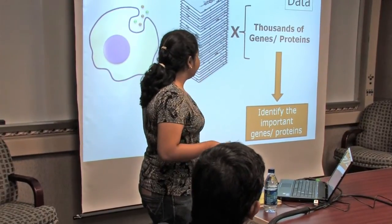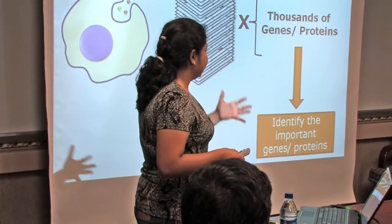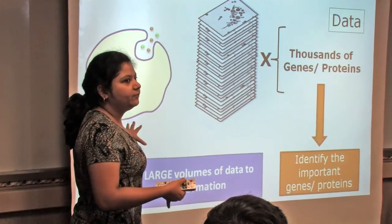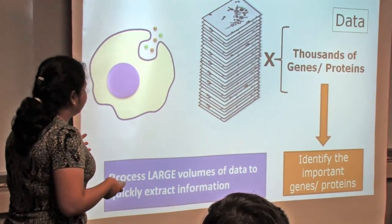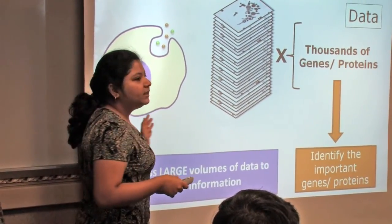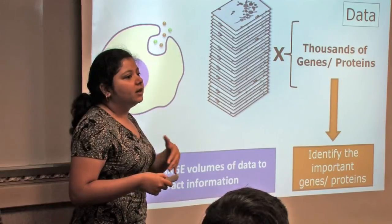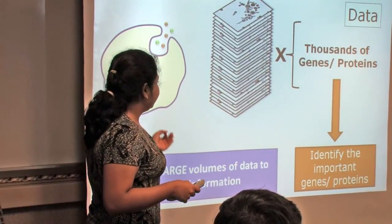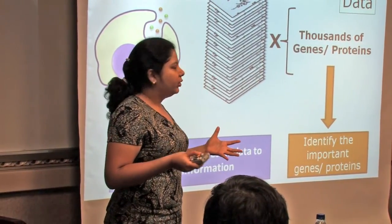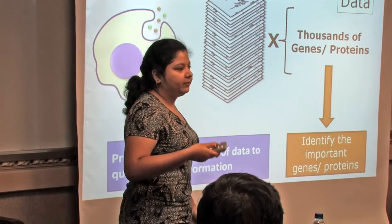Once we identify the important genes or proteins, we need to process large volumes of data and quickly extract information — and this is exactly where Information Theory comes in. It can be done manually on a small scale, but it takes a lot more time. Also, when you're quantifying something manually, it's easy to miss subtle differences between the data, which an automated process could definitely help us with.